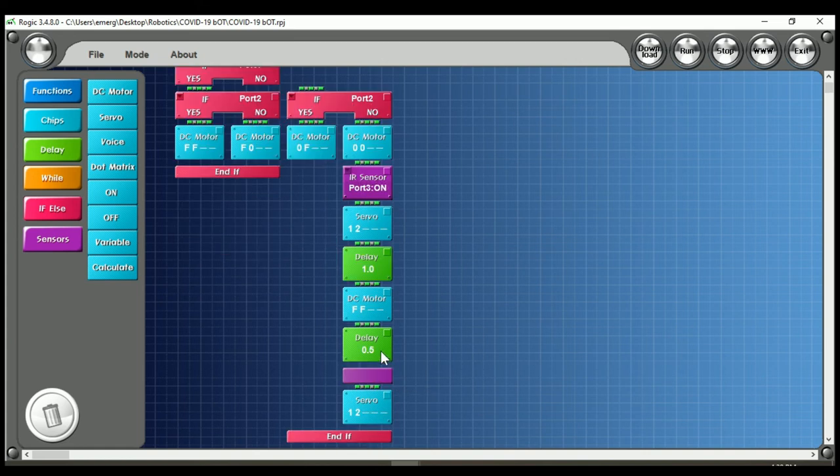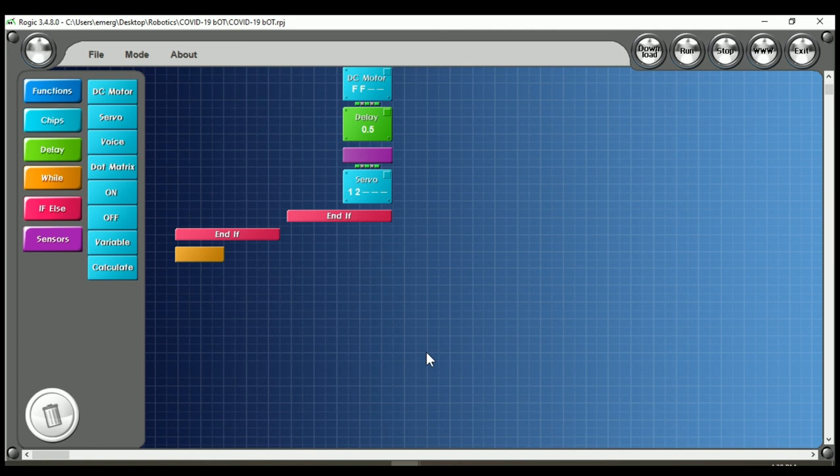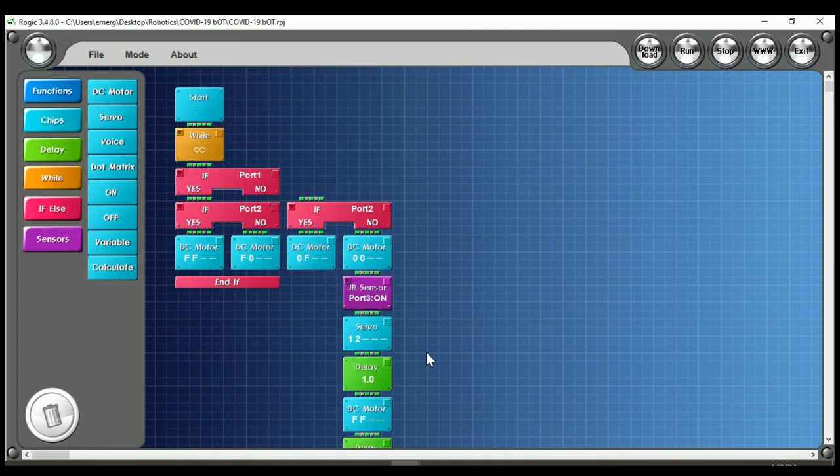I use another delay 0.5, and I use one IR sensor here as you can see for the sanitizer. And at the end I use servo 1 and servo 2. Servo 1 is 39 and servo 2 is 176. And that's it, so this is my programming.